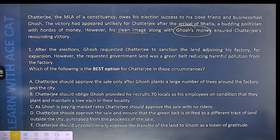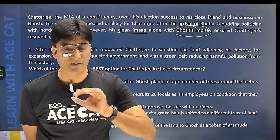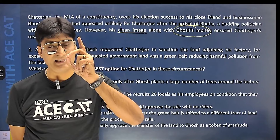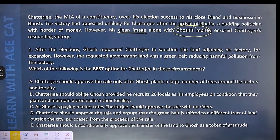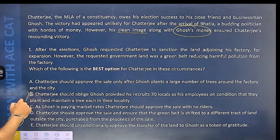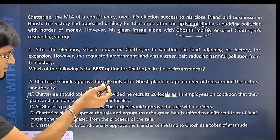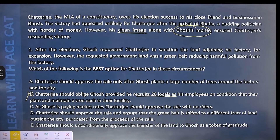Which of the following is the best option for Chatterji in these circumstances? We have to be extra careful and ensure we don't choose an extreme option, aiming to be most ethical. Option A: Chatterji should approve the sale only after Ghosh plants a large number of trees around the factory and the city. Option B: Chatterji should oblige Ghosh, provided he recruits 20 locals as employees on condition that they plant and maintain a tree each in their locality — but this is not a question of employment of locals, so this option is not suitable.